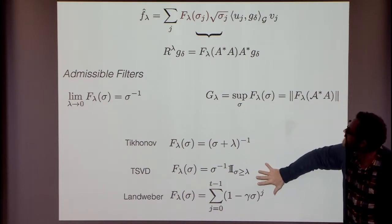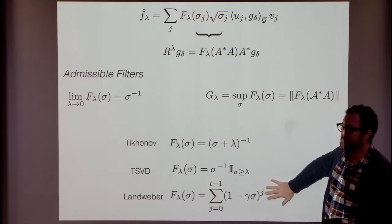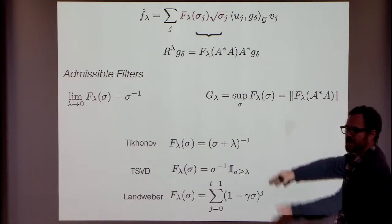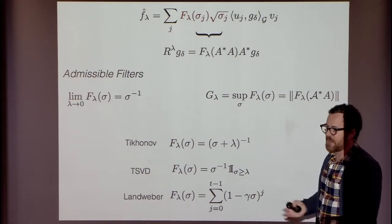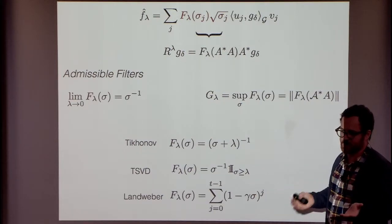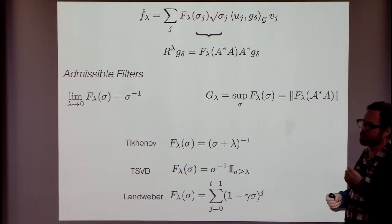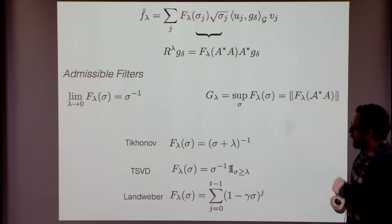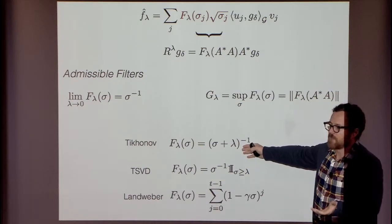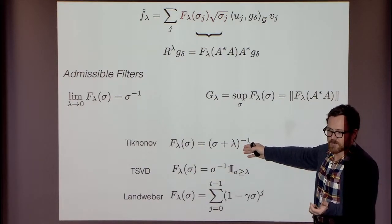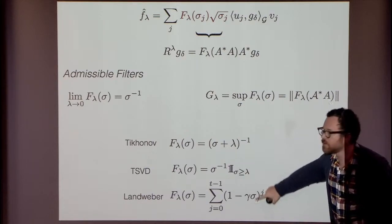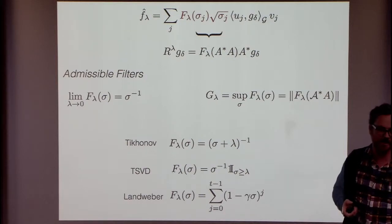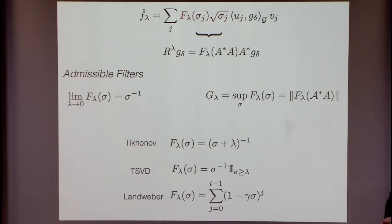Each of these immediately defines an algorithm. If you stop here, the game would be: take your matrix, do the SVD, plug in the filter, and check which filter is best. But computationally, you'd have to do SVD in every case, which is not appealing. For Tikhonov, we know different techniques. So the question is: is there another way to implement these filters without computing an SVD?